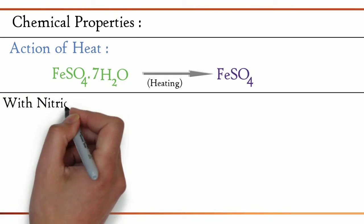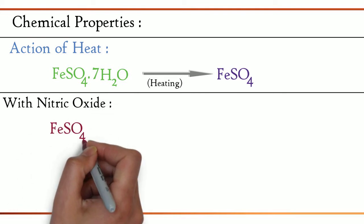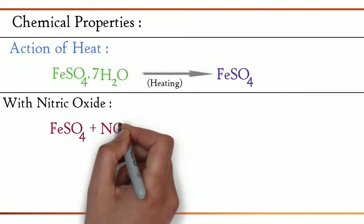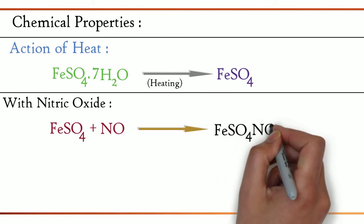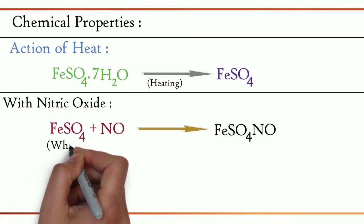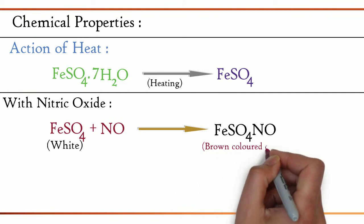Next, with nitric oxide. The equation is FeSO4 + NO gives FeSO4·NO. The white ferrous sulfate when reacts with nitric oxide gives brown colored complex.